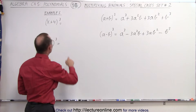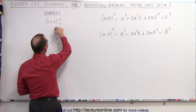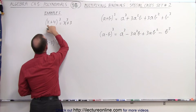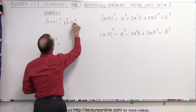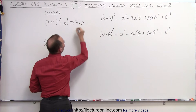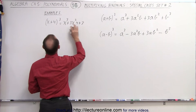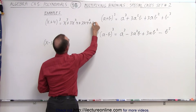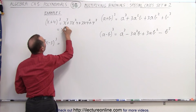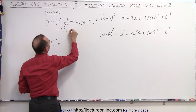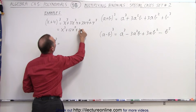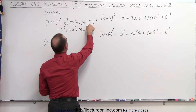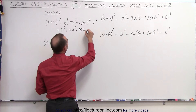Before we show you how that actually works, let's apply it to what we have over here. So x plus 4 quantity cubed: we take the first term and cube it, plus three times the first term squared times the last term to the first power, plus three times the first term to the first power times the second term squared, and then plus the second term cubed. If we then simplify that, this equals x cubed plus 12x squared plus 48x plus 64.